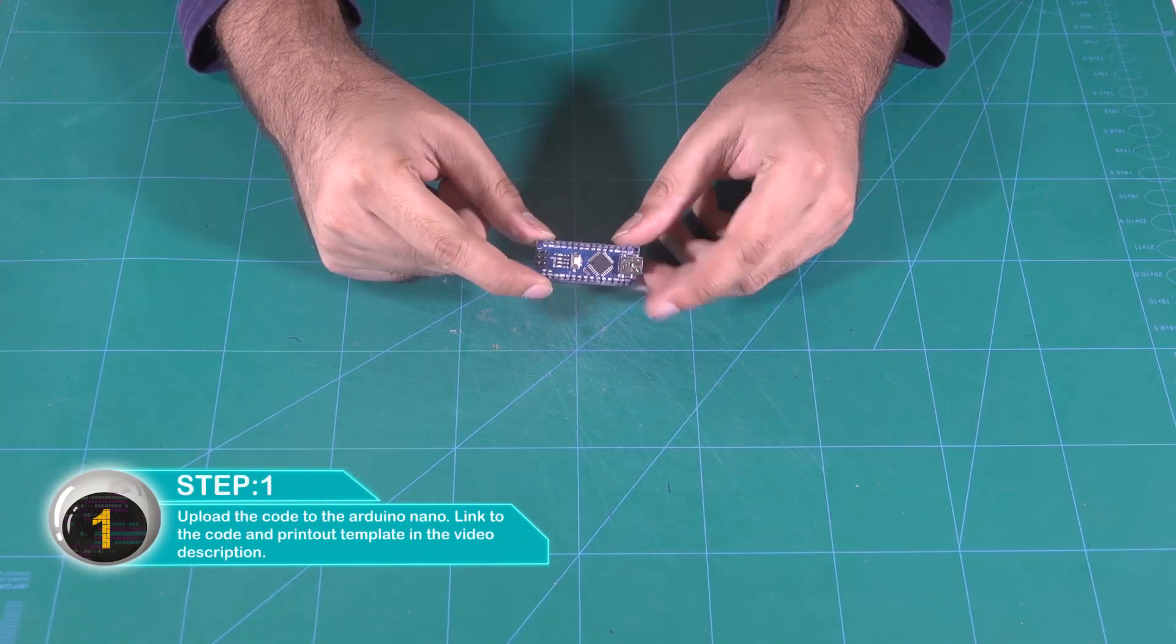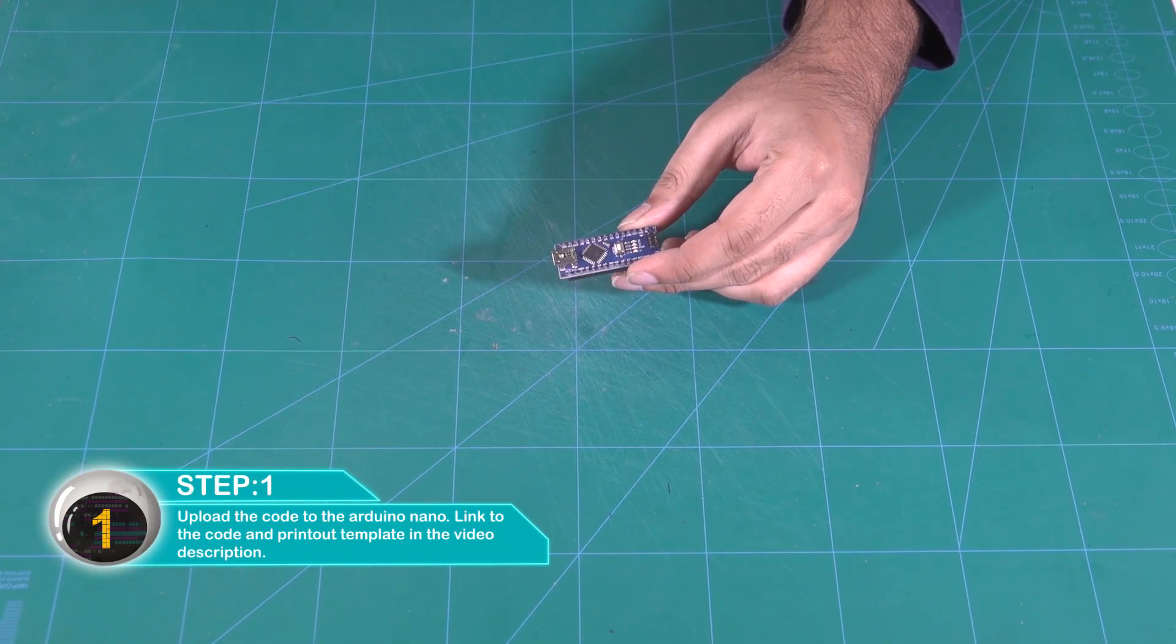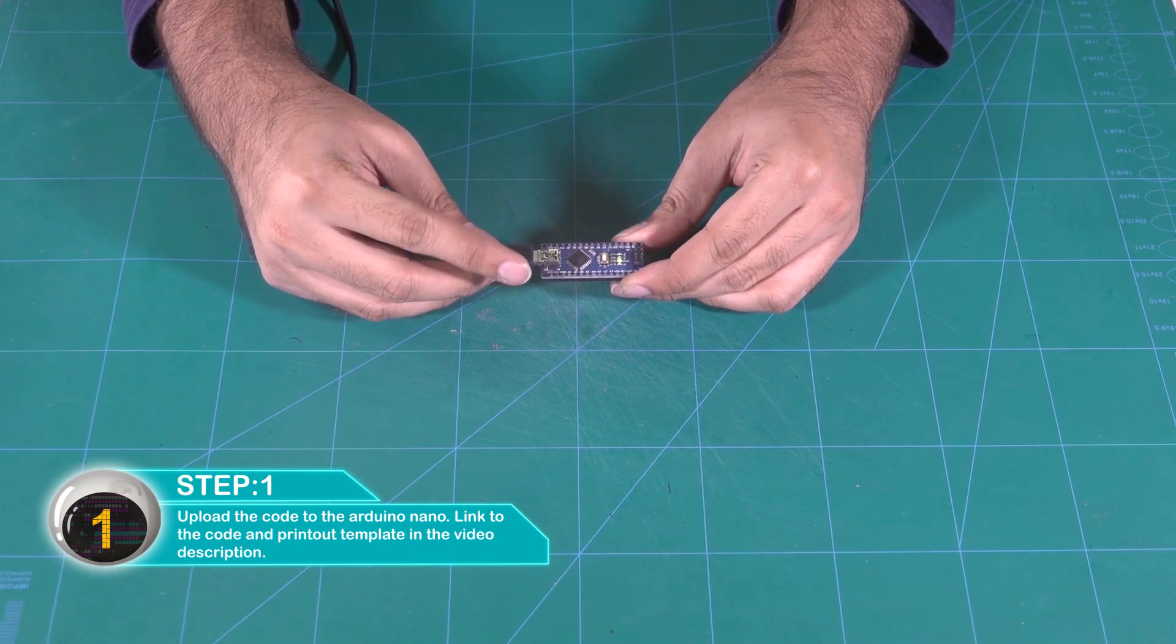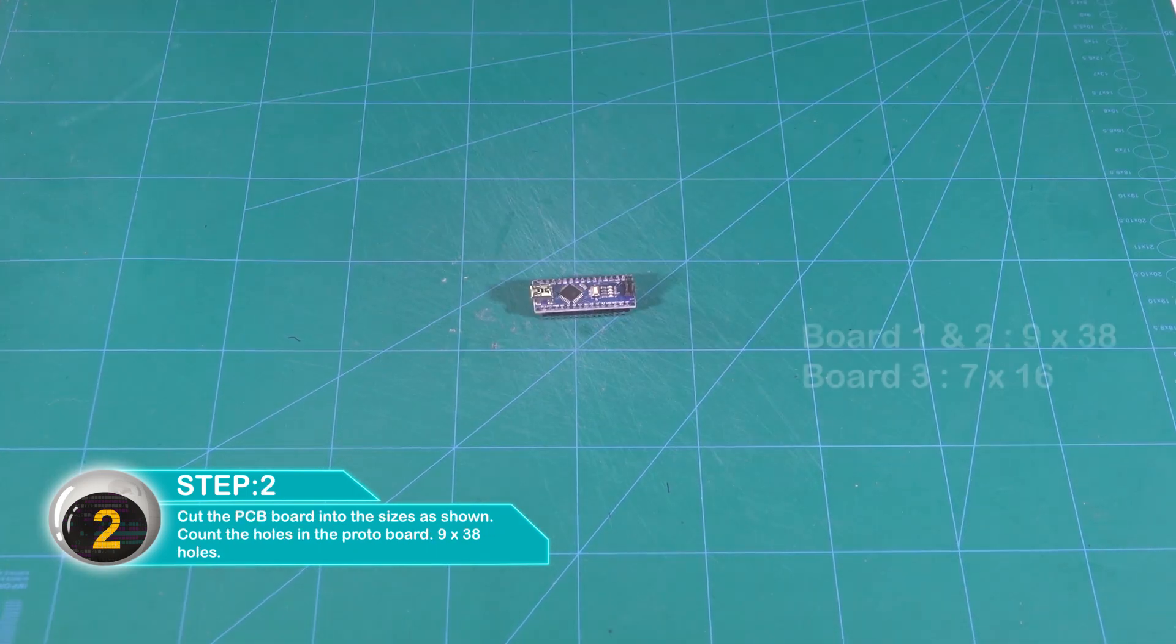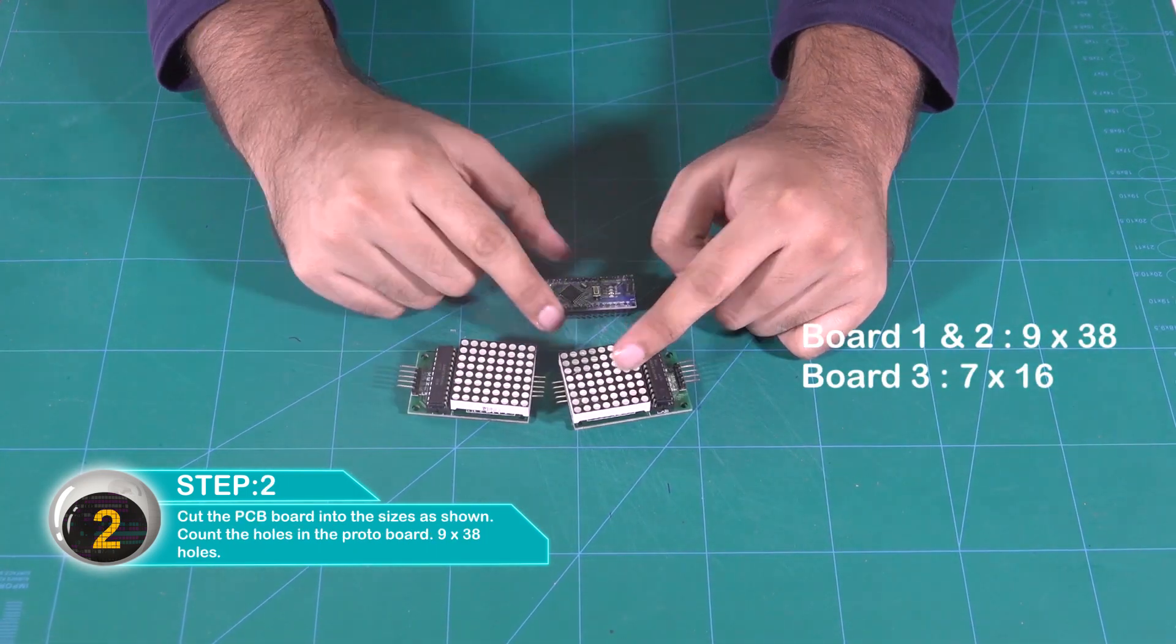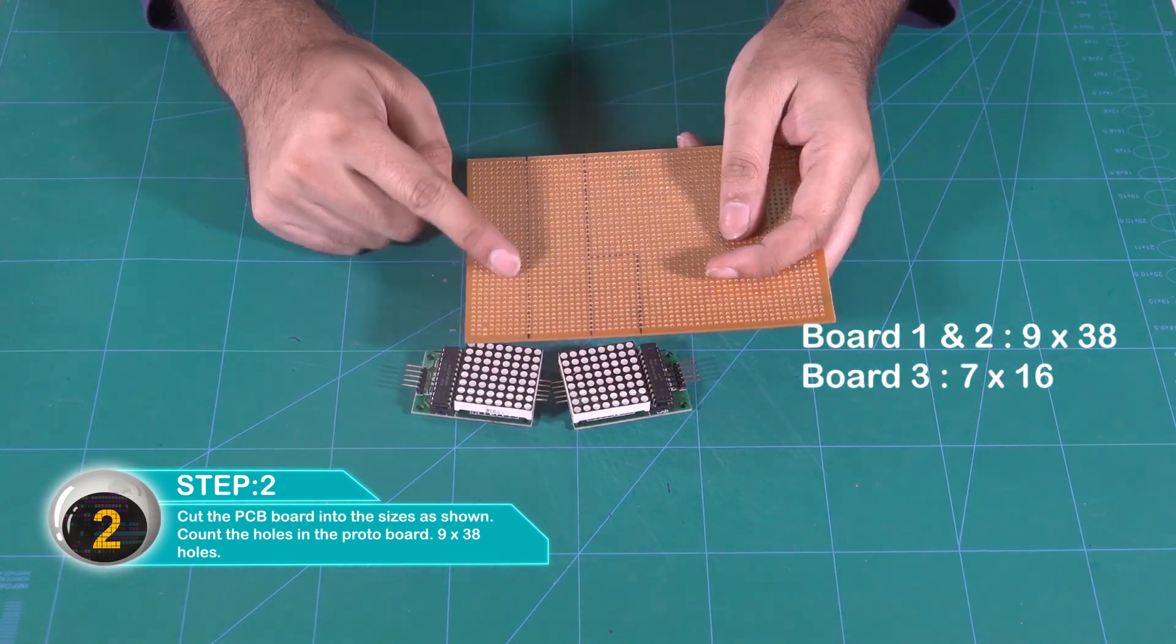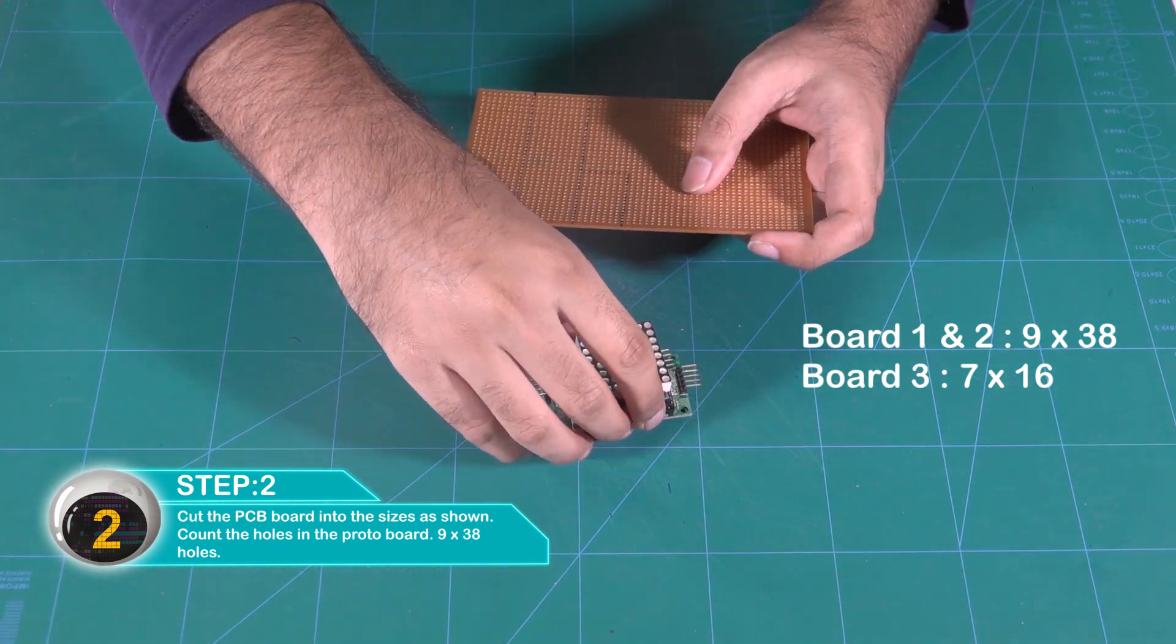The code to order and upload, a link to print out templates, I've got in the video description. Get a PCB proto board and cut three sizes: two sizes are 9 holes by 38 holes, and one size is 7 by 16 holes.